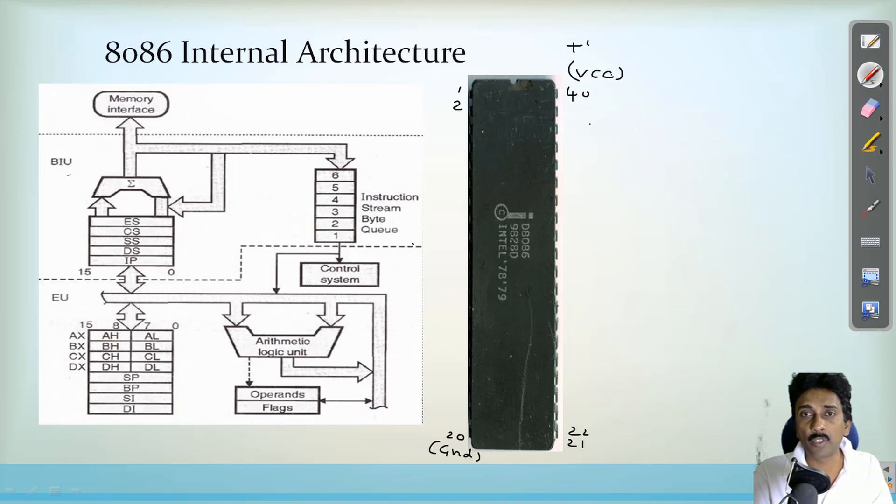It is powered up with the plus 5 volts power supply which comprises of 29,000 transistors involved in the 8086 microprocessor.